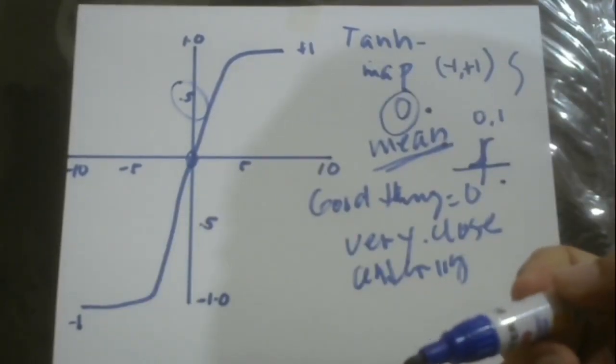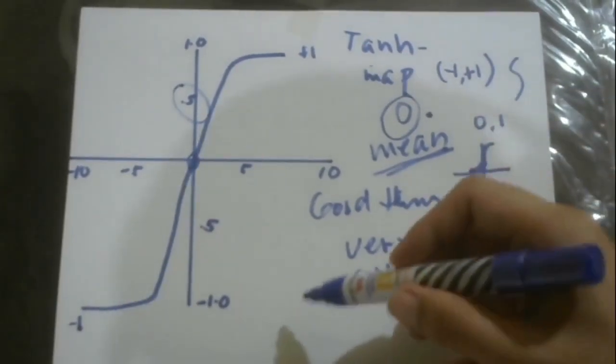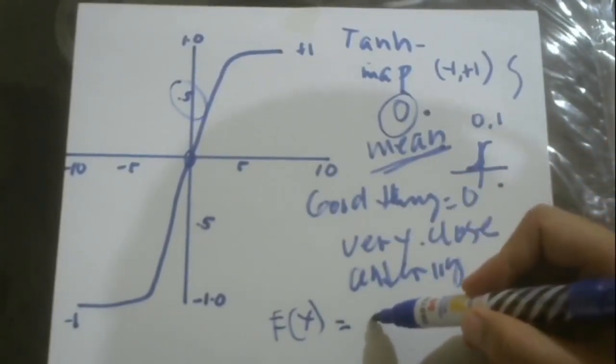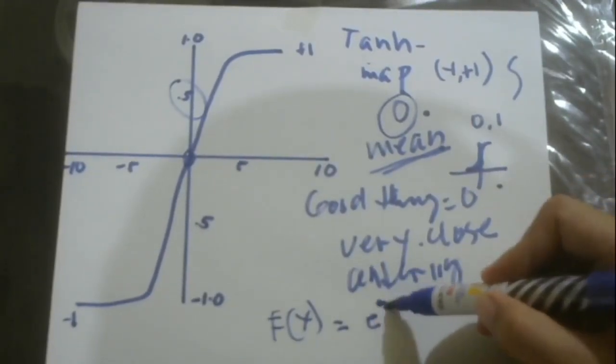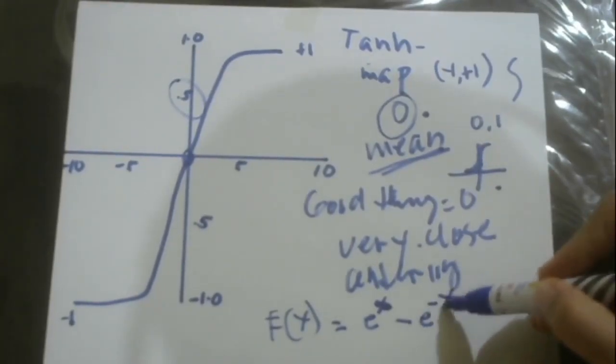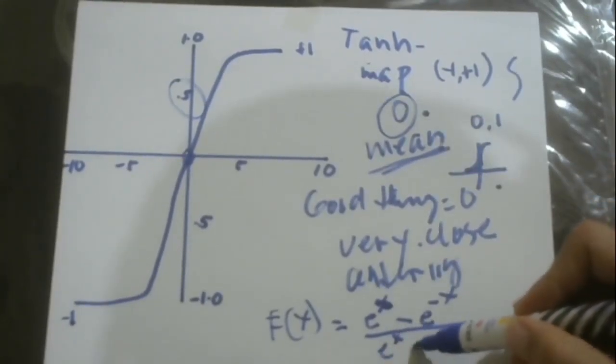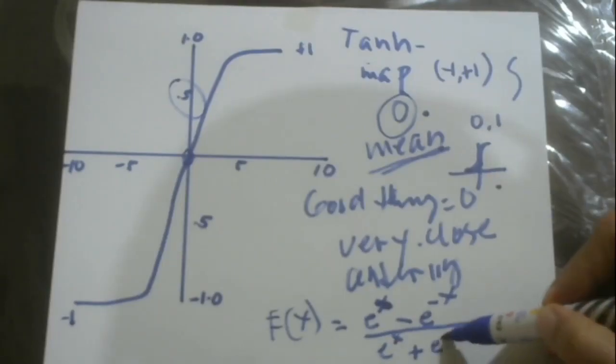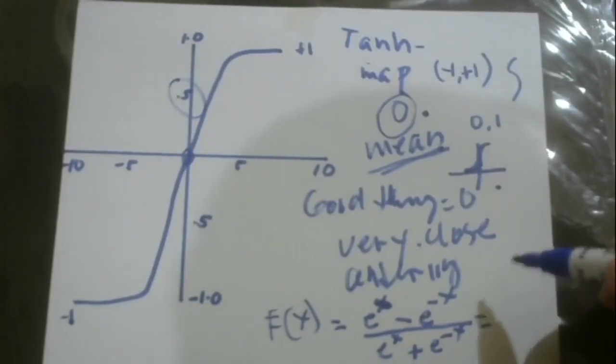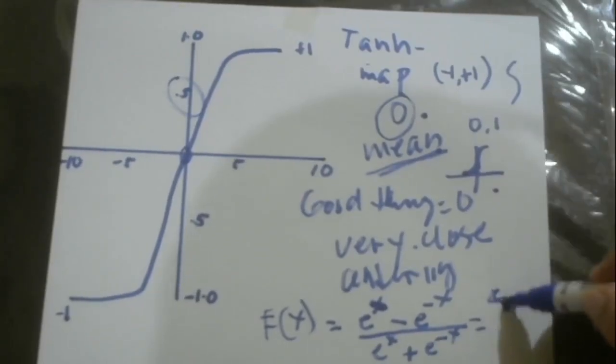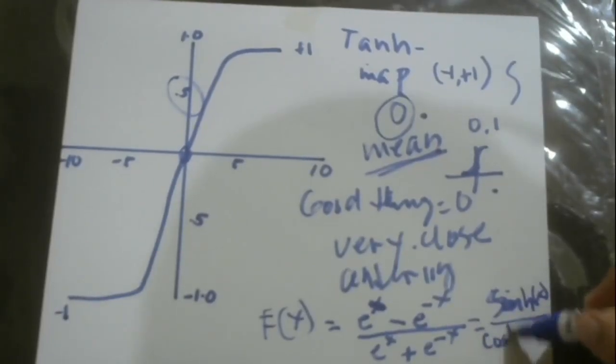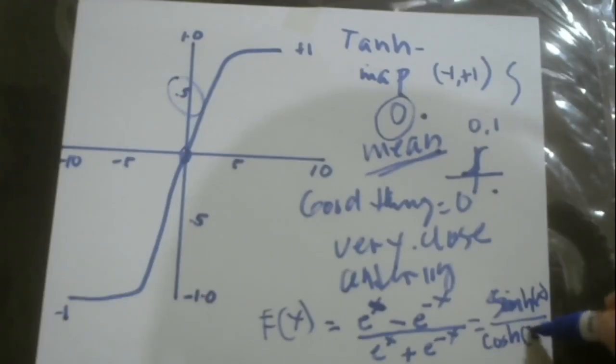How do we formulate tanh mathematically? We have the function of x: (e^x - e^(-x)) / (e^x + e^(-x)). This mathematical expression is equal to sinh(x) / cosh(x), where sinh is hyperbolic sine and cosh is hyperbolic cosine.